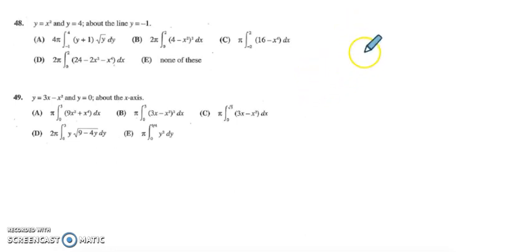I start these all by drawing a picture. So if I have the coordinate plane and I have the line or the curve x squared and then the line y equals 4, this is my region, and then I have my axis of revolution, which is way down here at y equals negative 1.